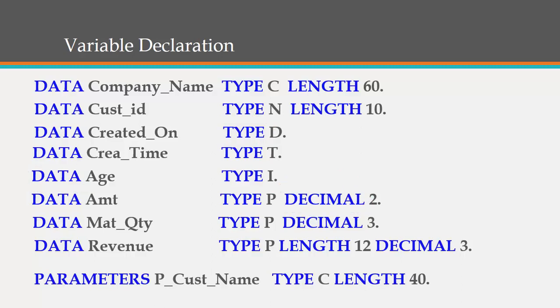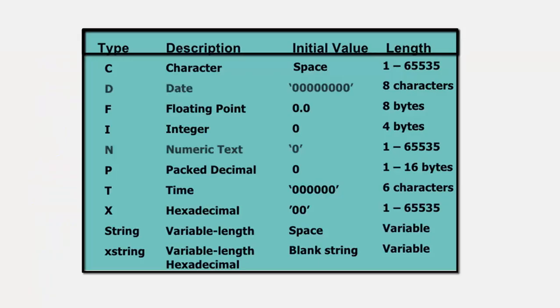These are all the different data types present in ABAP along with their initial values, maximum values, and minimum values. For character type C, the initial value is zero and it can store values from length 1 to 65535. For date type D, the initial value is eight zeros since its length is eight characters. Float is eight bytes, integer is four bytes. For numeric text, the initial value is zero and it can store numbers from 1 to 65535.